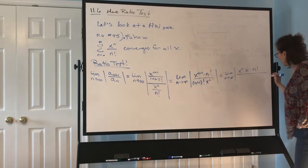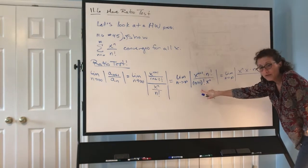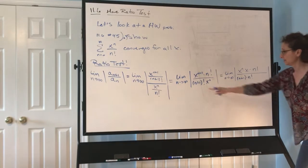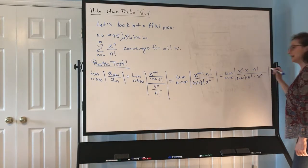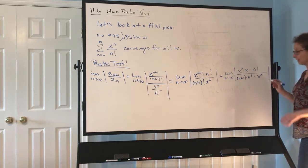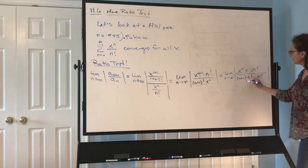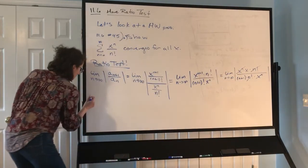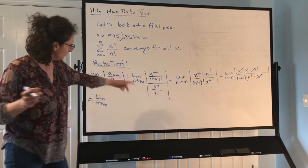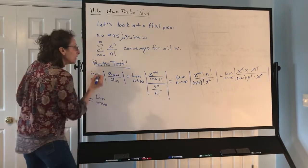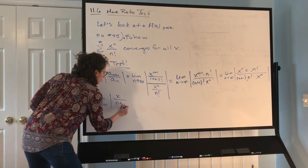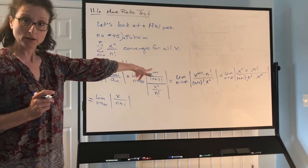Rewrite x to the n+1 as x to the n times x. And rewrite (n+1) factorial as (n+1) times n factorial. Now it's clear: x to the n cancels x to the n, and n factorial cancels n factorial. We continue carrying the limit statement along — without it, it's wrong. What we're taking the limit of now is just x divided by (n+1).